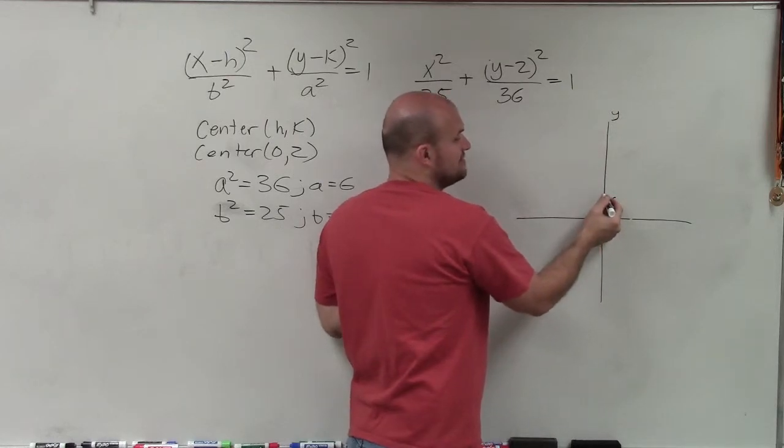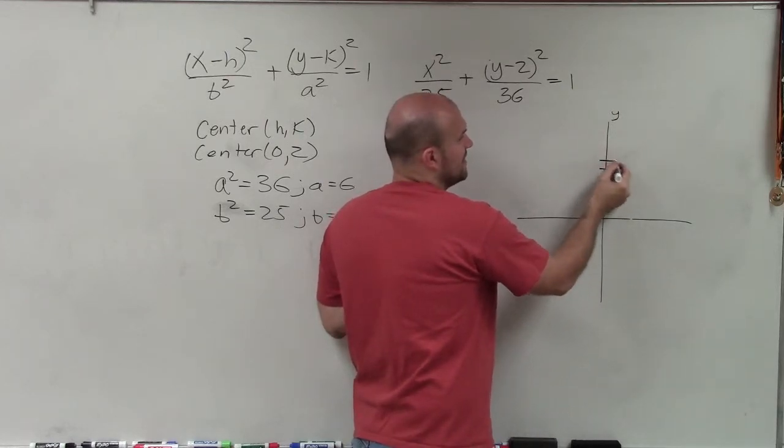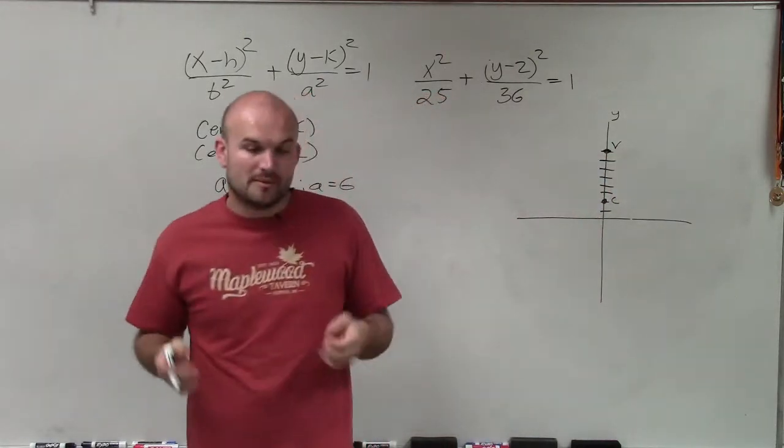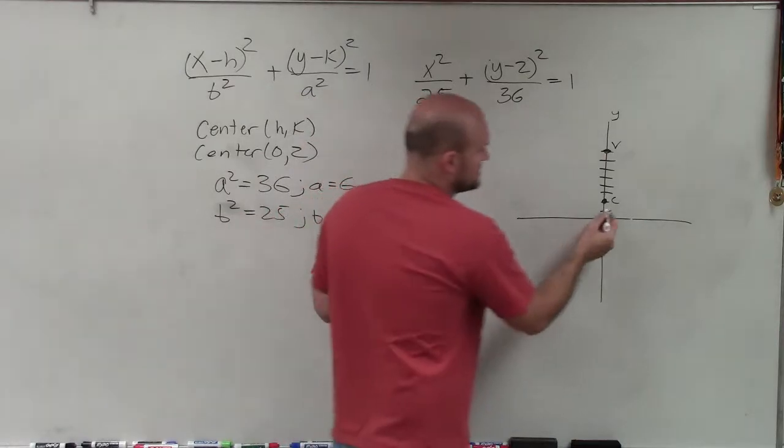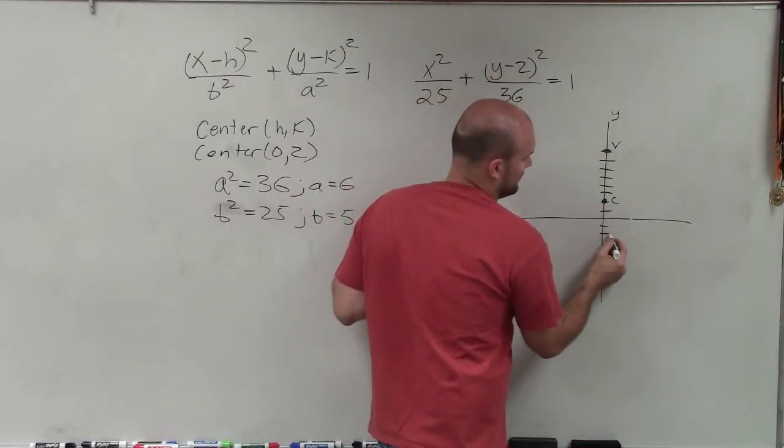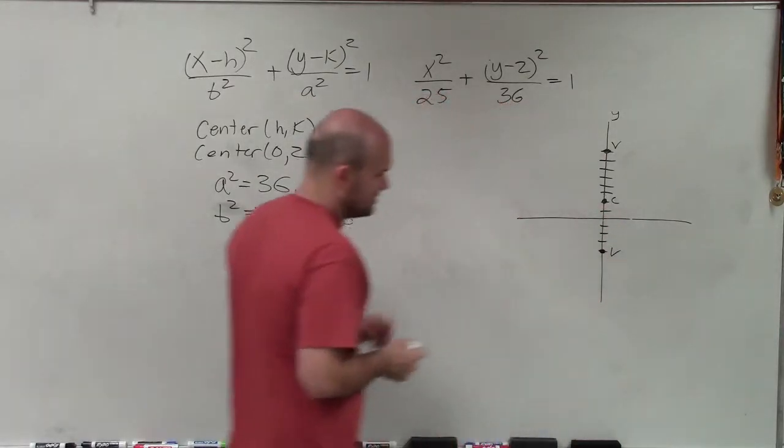So from the center, I'm going to go up 6, 1, 2, 3, 4, 5, 6, and find my first vertice. But remember, the center splits is in between the two vertices. So I can go down 6 units, 1, 2, 3, 4, 5, 6, to find my other vertice.